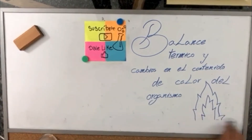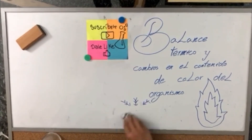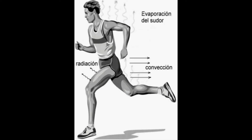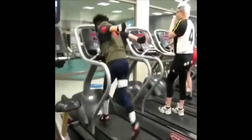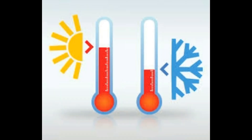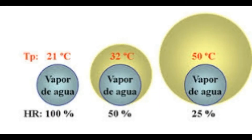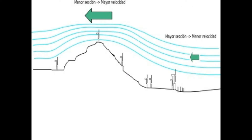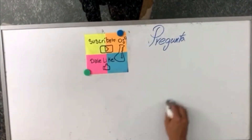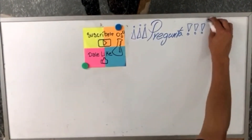Balance térmico y cambios en el contenido de calor del organismo. El hecho de que la temperatura corporal central se mantenga relativamente constante nos dice que existe un balance entre la ganancia y la pérdida de calor. El organismo produce una cantidad de calor determinada en el proceso catabólico y pierde igualmente una cantidad de calor por los mecanismos de radiación, convección y evaporación. Los factores externos que determinan la pérdida de calor son la temperatura, la humedad del aire, la velocidad de las corrientes del aire y la temperatura de los objetos alrededor. Por lo tanto, si un individuo está en balance térmico, la ganancia es igual a la pérdida de calor.